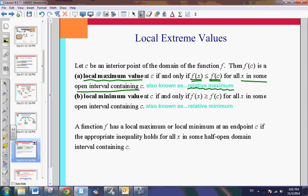Now, the local minimum says the exact same thing. You have a point C, but this time F of C is less than F of X for all X in some open interval. We also can call this the relative minimum. Now, you can have a local maximum or a local minimum at an end point also. If it's closed and continuous.